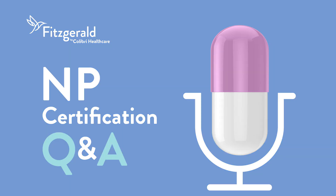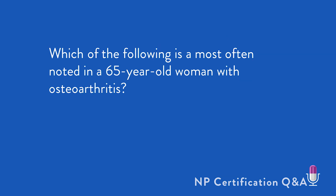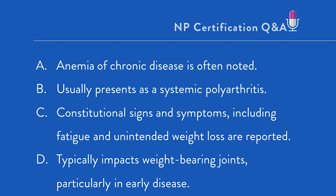Let's jump right in. Which of the following is most often noted in a 65-year-old woman with osteoarthritis? A. Anemia of chronic disease is often noted. B. Usually presents as a systemic polyarthritis. C. Constitutional signs and symptoms, including fatigue and unintended weight loss, is reported. D. Typically impacts weight-bearing joints, particularly in early disease.